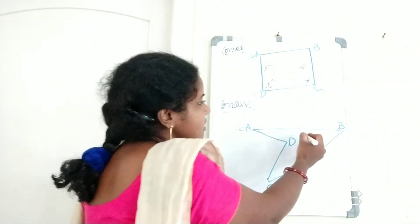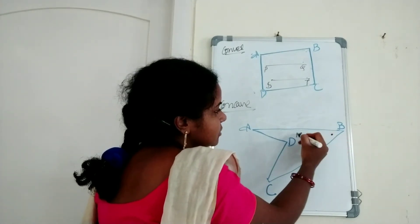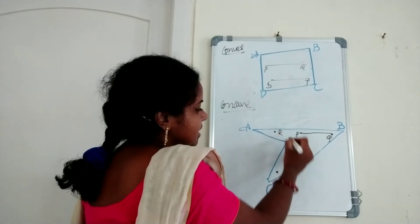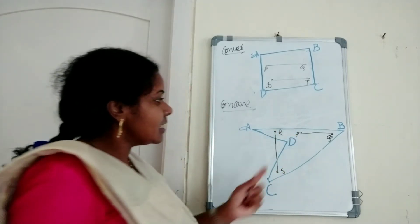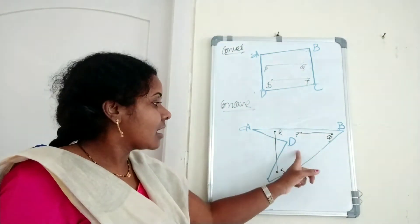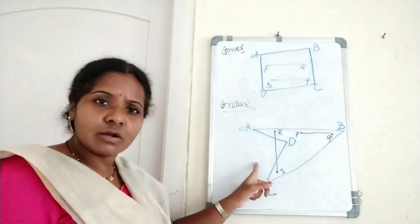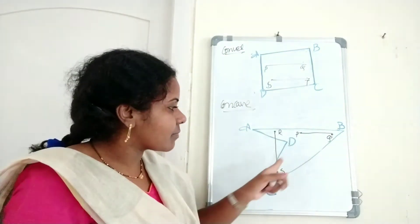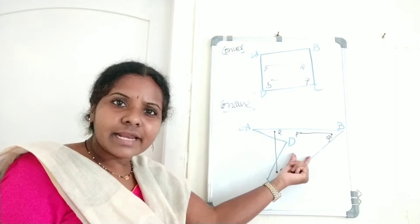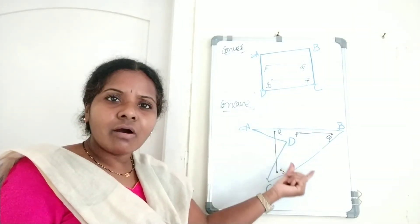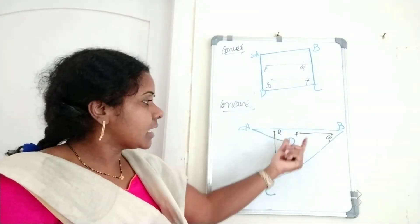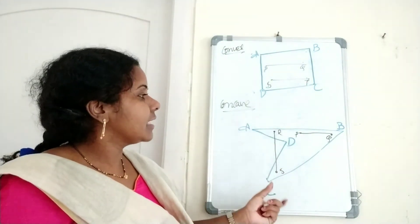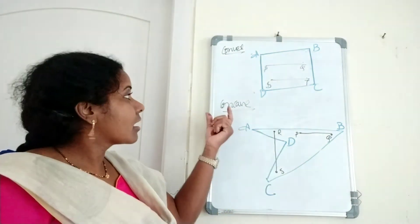Now for the concave case — suppose we take one point P and another point, say R and S, inside the concave quadrilateral and join them. This RS line segment is not in the interior of the quadrilateral; it lies outside — in the exterior. So if you take any two interior points, the line segment joining them does not necessarily lie in the interior. That quadrilateral is called a concave quadrilateral.